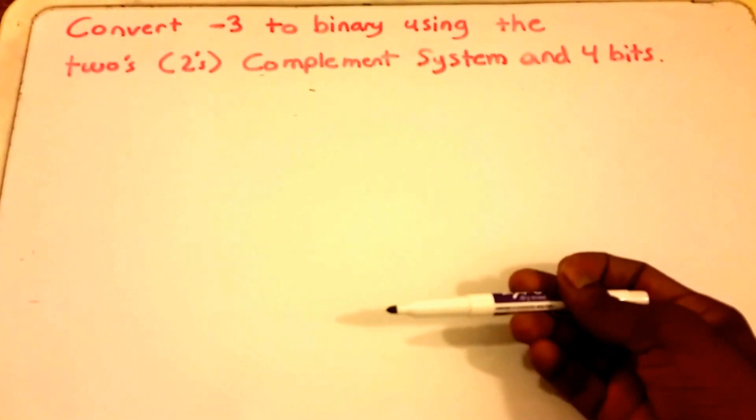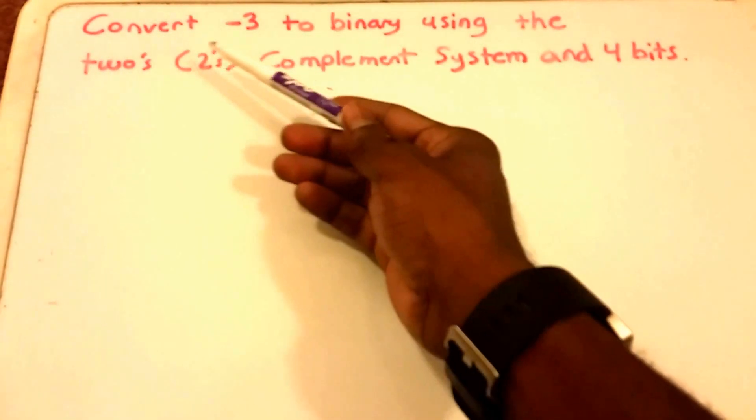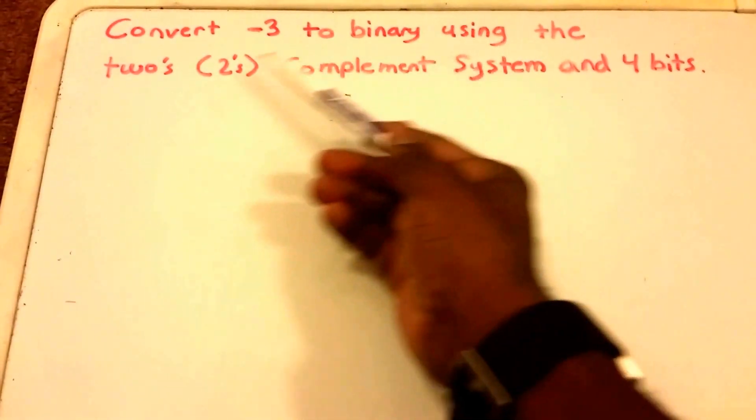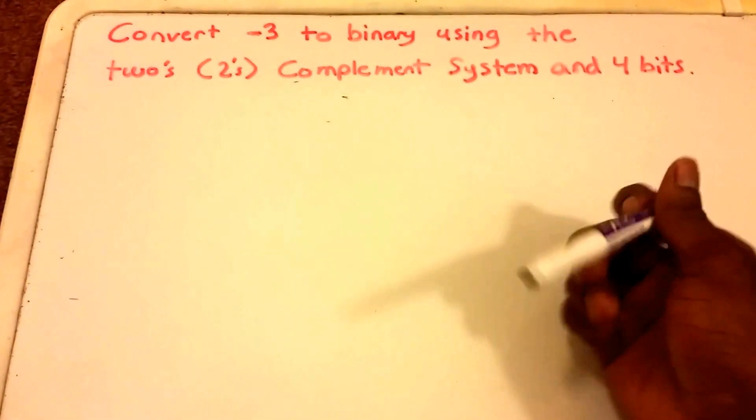Hey guys and welcome to this video on the two's complement. So here we have our problem: it says convert negative 3, which is in base 10, to binary using the two's complement system and 4 bits.